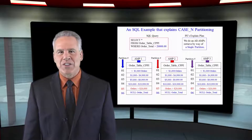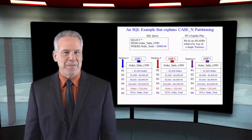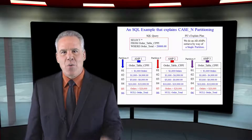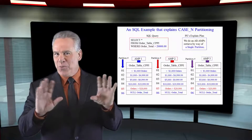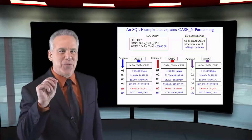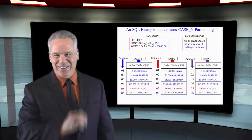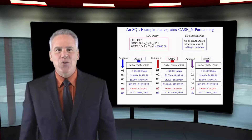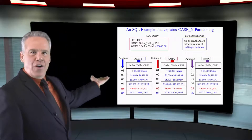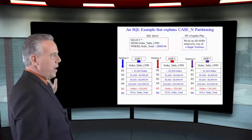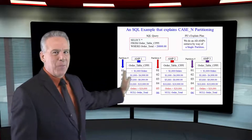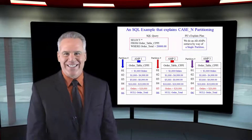We want to select everything from this table where the order total is greater than 20,000. And you can see here, it's an all-amps retrieve from a single partition.